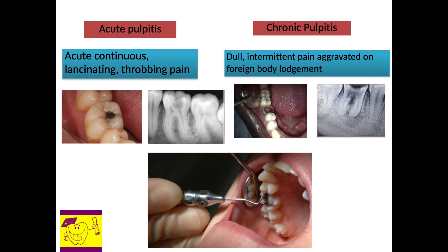In acute pulpitis, pain is acute, continuous, lancinating, increasing on lying posture, and aggravated by heat and cold. Radiograph shows radiolucency involving the pulp with no periapical changes.